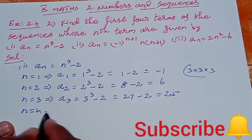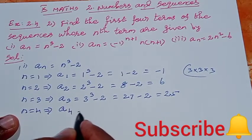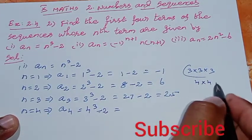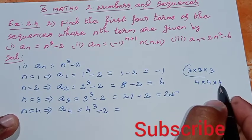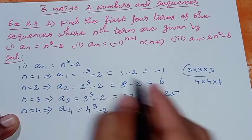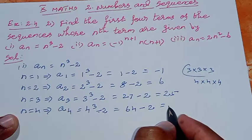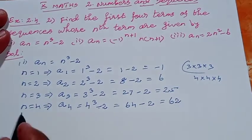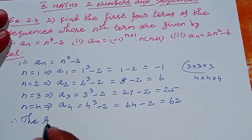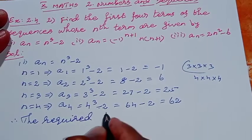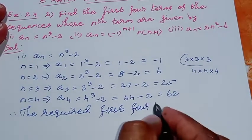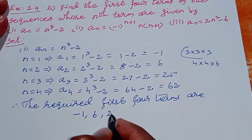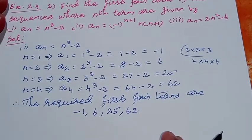The third term is 25. For the fourth term we apply n equal to 4: A4 equals 4 cubed minus 2. 4 into 4 is 16, 16 into 4 is 64, and 64 minus 2 equals 62. Therefore the required first four terms are: first term minus 1, second term 6, third term 25, fourth term 62.